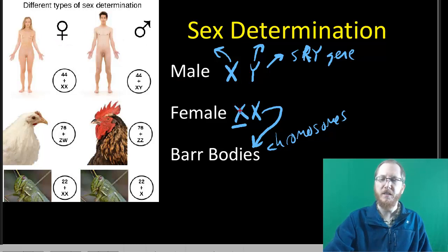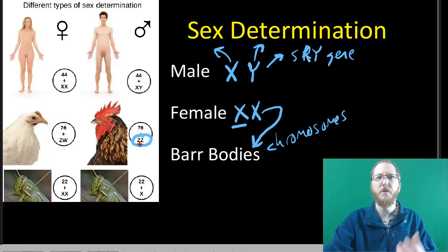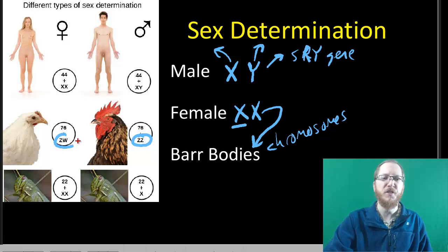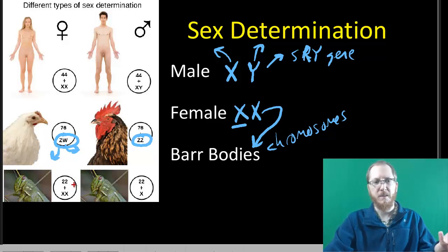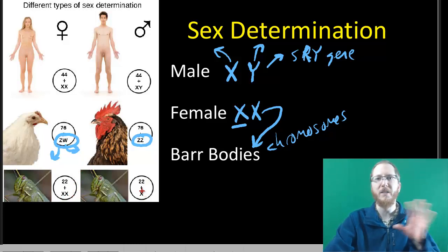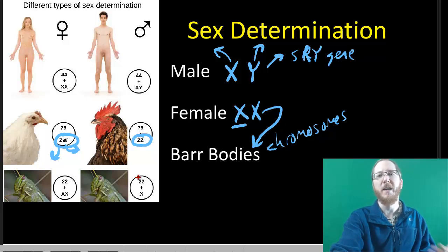Humans use the XY/XX system, but it's not the only one. Birds use Zs and Ws — males are ZZ and females are ZW, so females are the ones that ultimately determine the gender of offspring. In grasshoppers, XX is female and a single X with nothing else is male. There are many other systems, so don't think the mammalian human way is the only way there is.